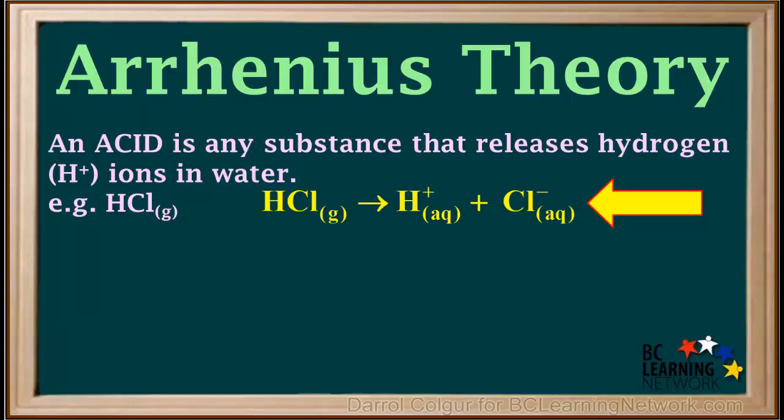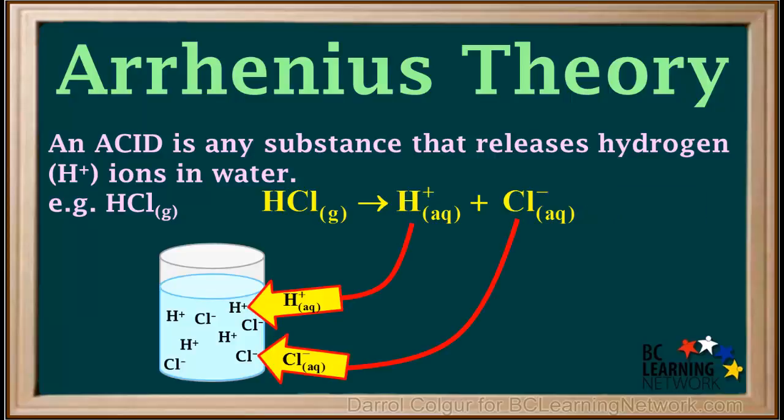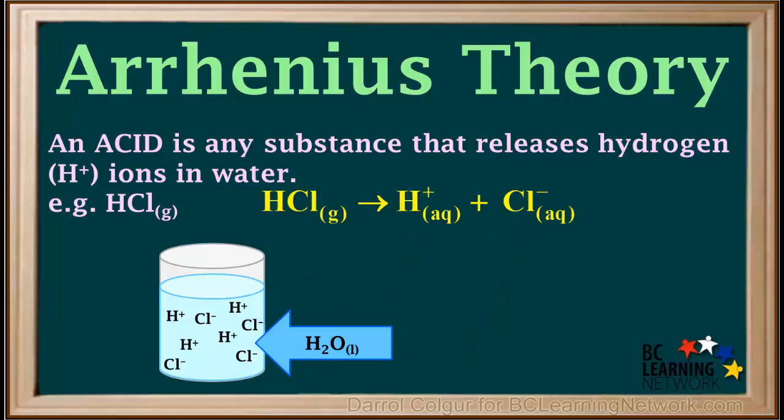This whole process can be summarized by the equation HCl gas gives H+ aqueous plus Cl- aqueous. Aqueous means that the ions are surrounded by water molecules. So Arrhenius pictured an aqueous solution of HCl as a collection of H+ and Cl- ions floating around freely in the water. The water molecules are not shown here in order to keep the diagram simple. Water is given a blue color in this diagram.